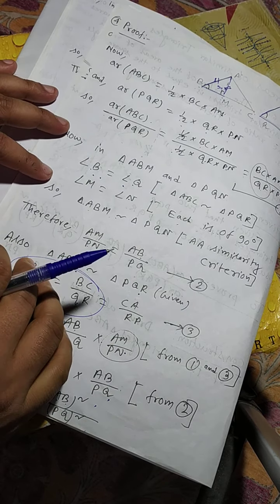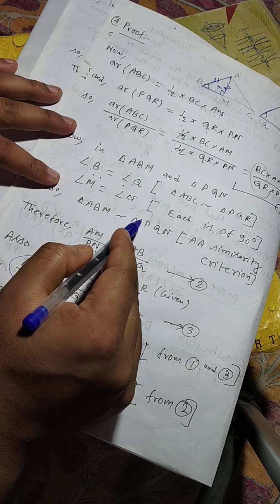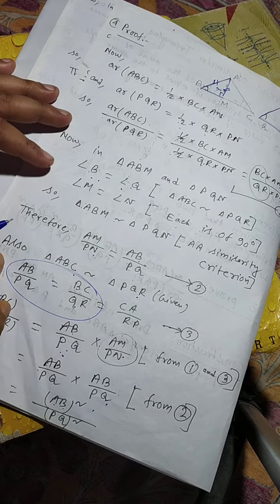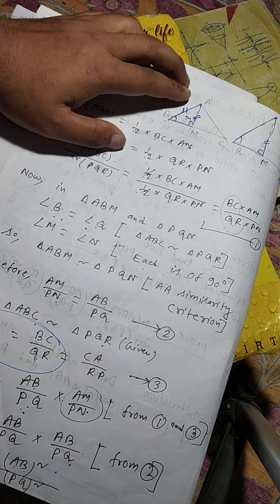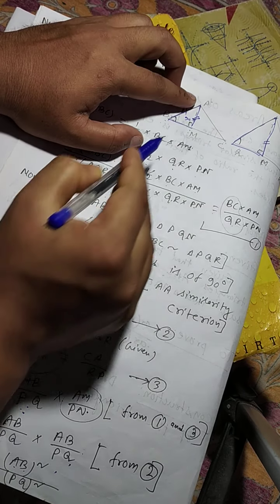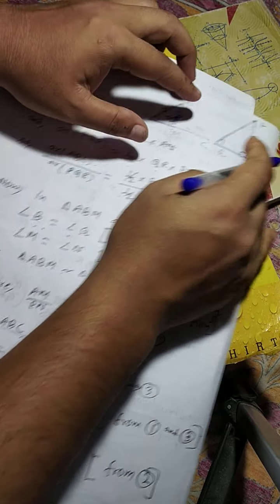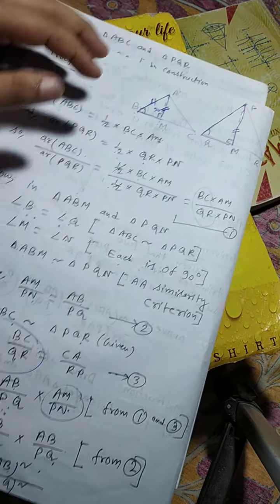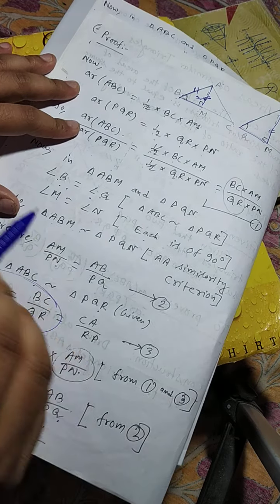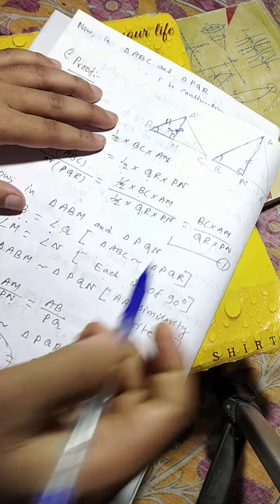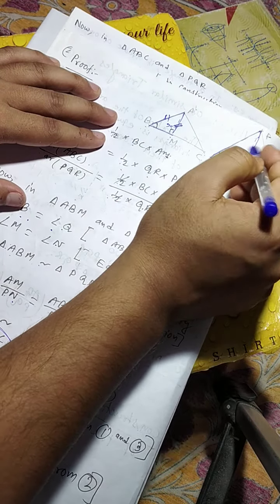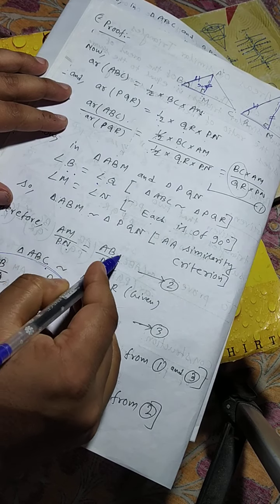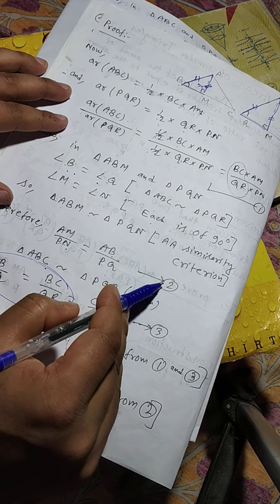Since two triangles are similar, their corresponding sides are in the same ratio. From triangles ABM and PQN, we can write AM by PN equals AB by PQ. This is equation number 2.